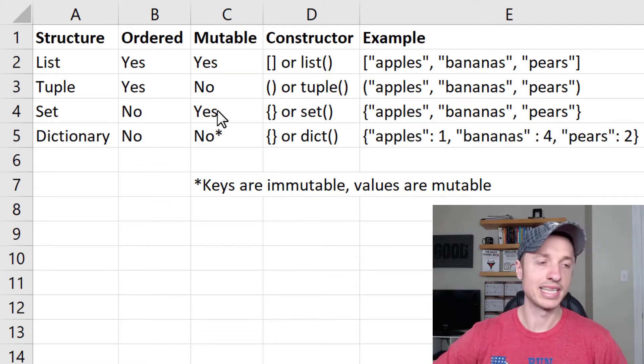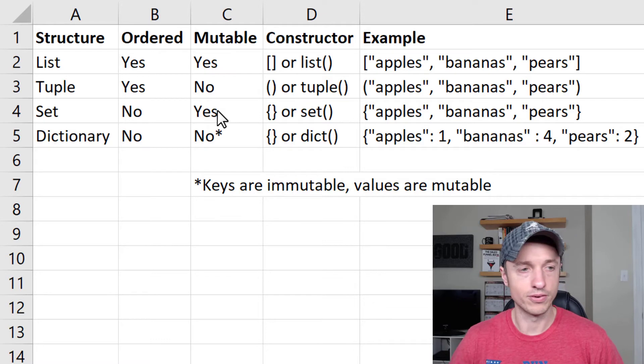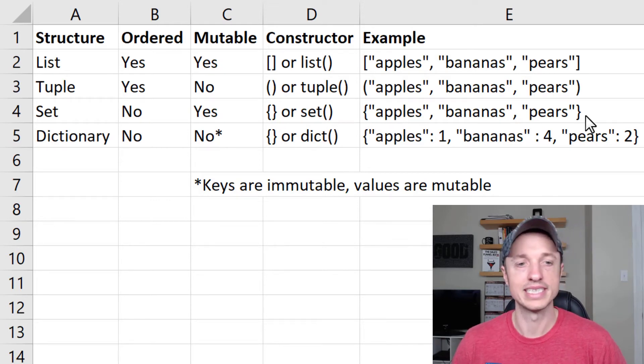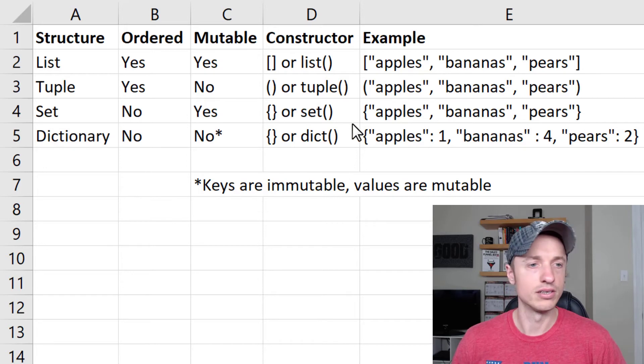There's some uses for these unordered sets that we'll get into in the sets video. They're also mutable, so we can add things to sets, subtract things from sets, etc. So of course, some pros and cons with doing that. To set up a set, we can use the curly brackets or the set constructor. And so this is what a set of information looks like.